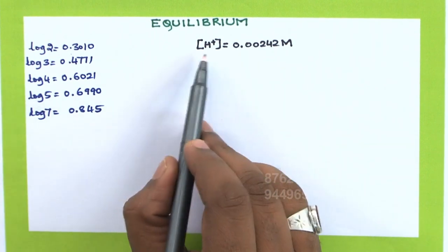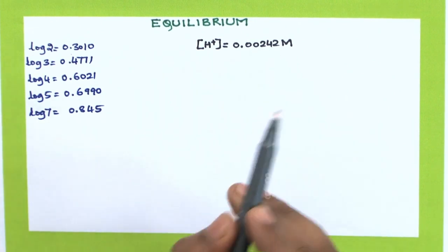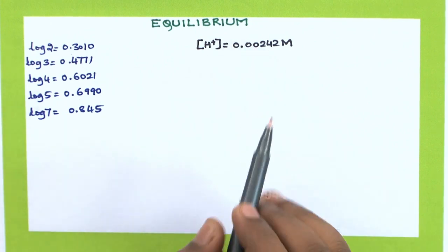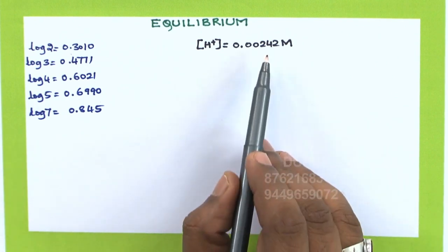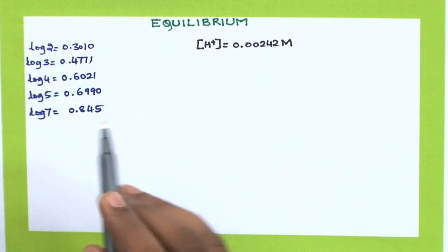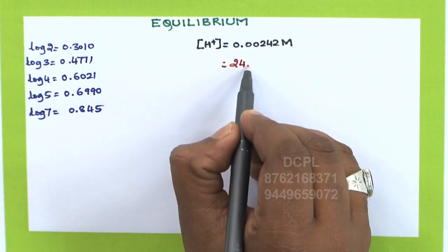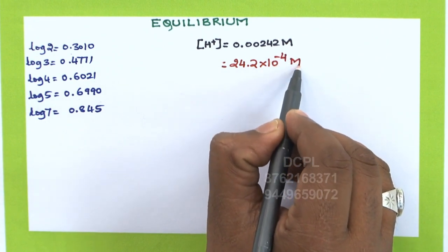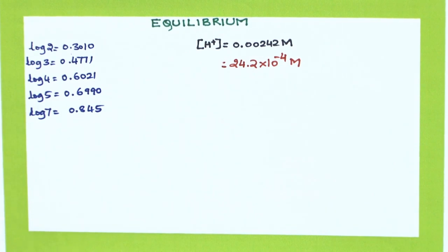Let us calculate the pH of a solution whose concentration is 0.00242 molar. To calculate the pH, make sure that you shift the decimal after two digits. If you shift the decimal by two digits, you can easily take the multiples of the number. We can write this as 24.2 × 10⁻⁴ molar — that is, the decimal has been shifted so that we get 24.2 × 10⁻⁴ molar.